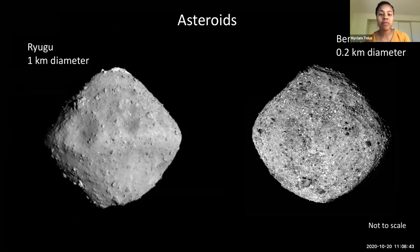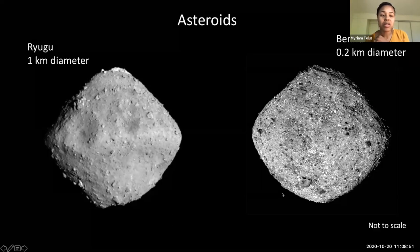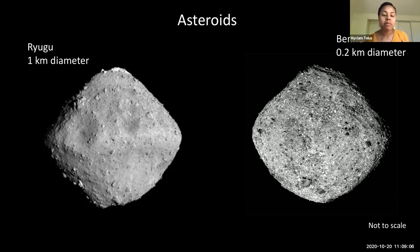Here are some asteroids that are really interesting because they're the focus of current sample return missions — Ryugu and Bennu. These are carbon-rich asteroids. It's not exactly clear what these planetesimals look like originally, because they've been battered and reconfigured by billions of years of impact collisions.